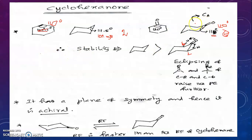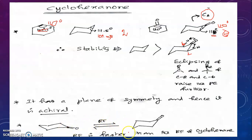The point group of cyclohexanone is Cs. The Cs point group has a plane of symmetry, so since cyclohexanone has a plane of symmetry it must be achiral. Ring flipping in cyclohexanone occurs faster than in cyclohexane — this is an experimental observation.